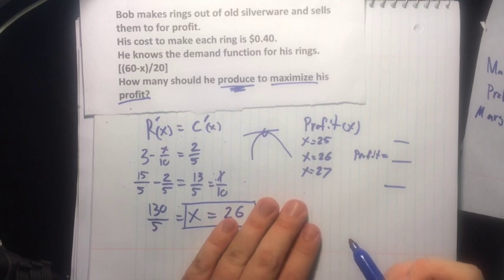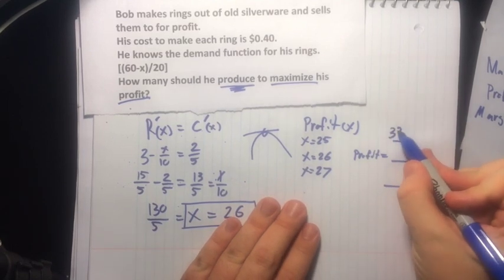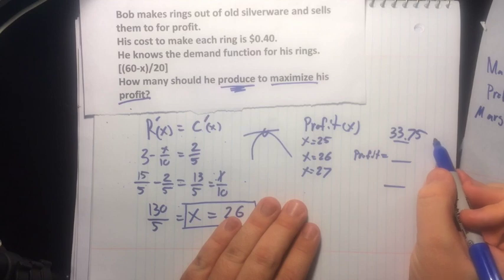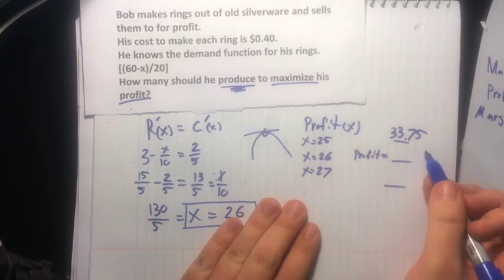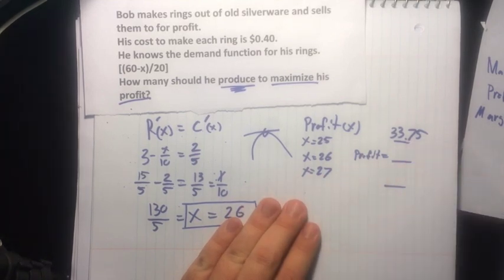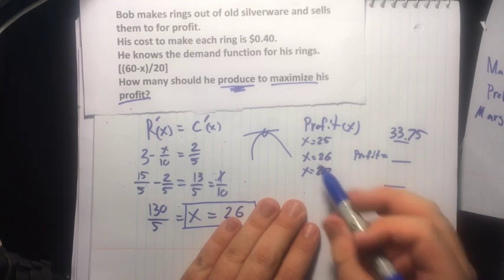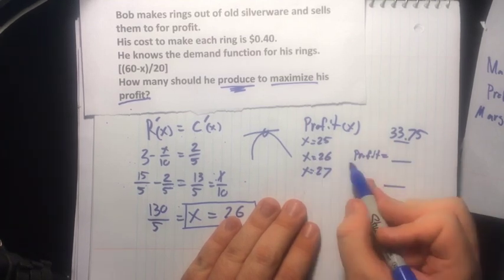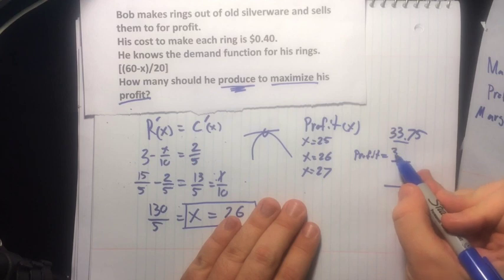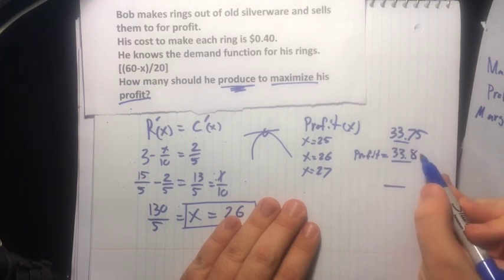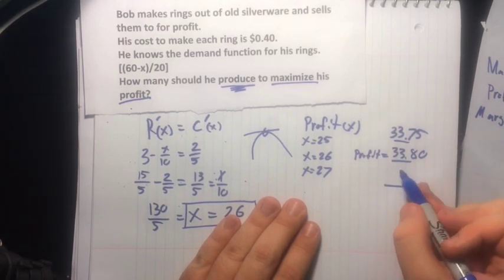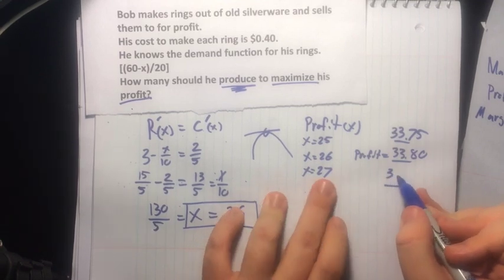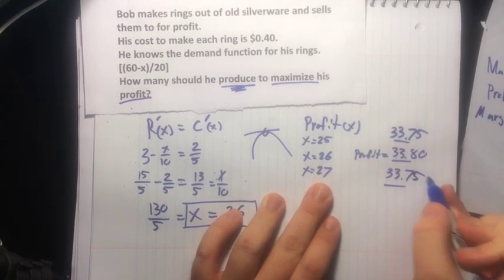Let's go ahead and do some math beforehand here on the calculator. So this is his profit. Everything is in dollars. So for all his work, he's going to make $33. And then this is $33.80. And then for 27, it's $33.75.